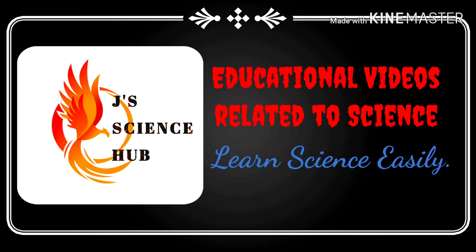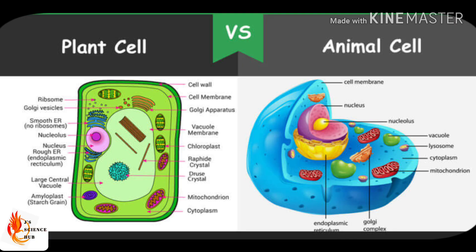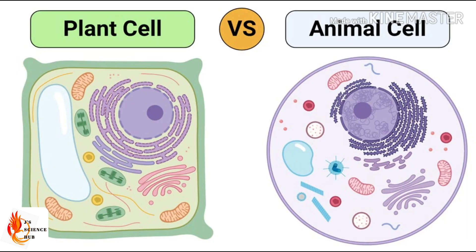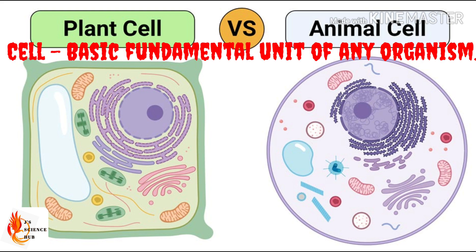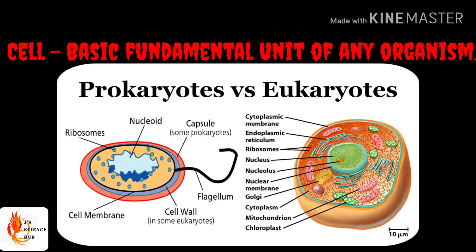Hello students, this is Jay Science Hub. Today we are going to study about the difference between plant and animal cells. Before we entering into the topic I want to give you a brief description about plant and animal cells. Cells can be divided into two types: they are prokaryotic cells and eukaryotic cells. Plants and animals are the advanced cells so they belong to the eukaryotic cell.